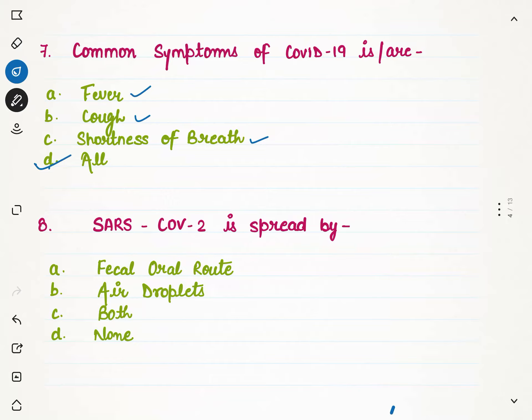The next question: SARS-CoV-2 is spread by — option A fecal oral route, yes, and air droplets, also yes. So both options are correct, meaning option C is the correct option.